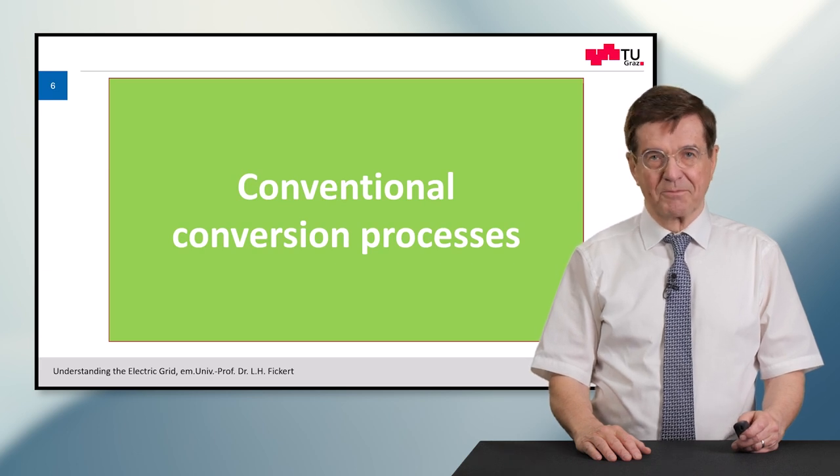In the first part of my lecture, I tell you about the conventional conversion processes. Generally, the electricity system brings the power and energy from the electricity generation through the network to the users. But today we want to concentrate on the primary energy and how primary energy is converted into electricity energy.